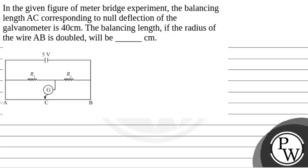So let's set the question. The question says that in the given figure of meter bridge experiment, the balancing length AC corresponding to null deflection of the galvanometer is 40 cm. The balancing length if the radius of the wire AB is doubled will be blank cm.